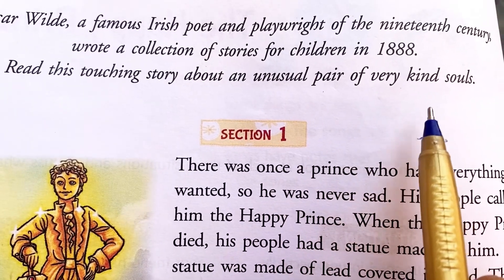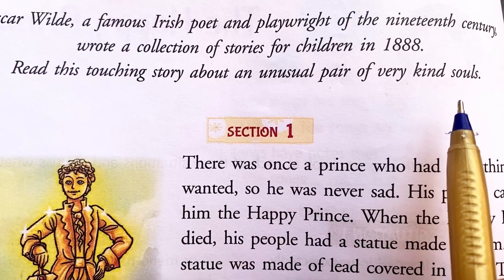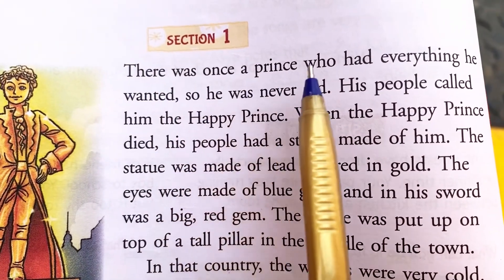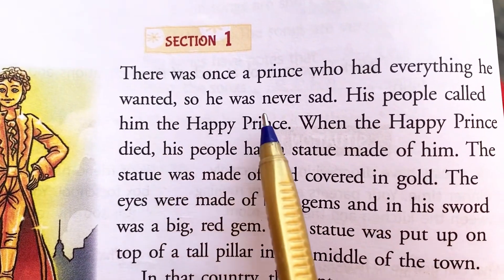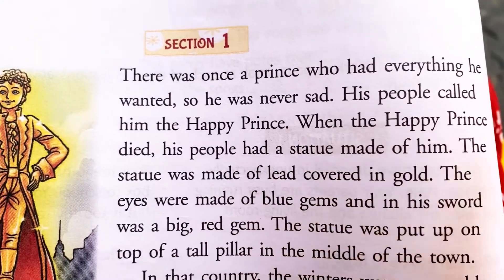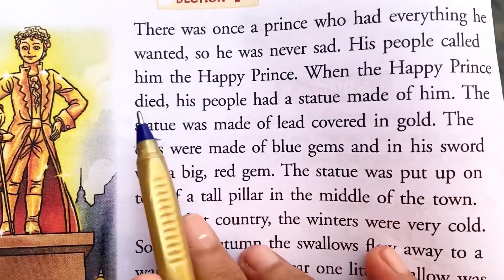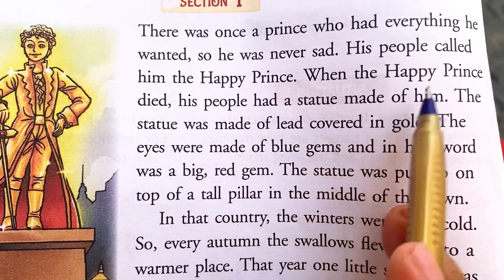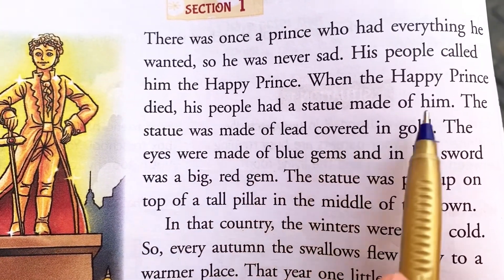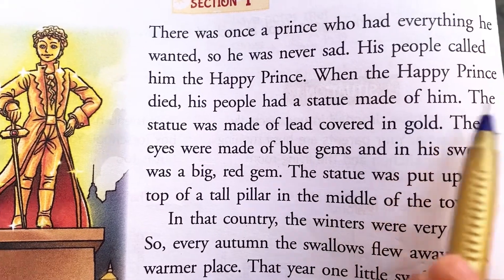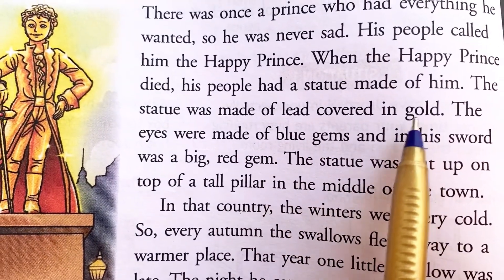Section 1. There was once a prince who had everything he wanted, so he was never sad. His people called him the Happy Prince. When the Happy Prince died, his people had a statue made of him.